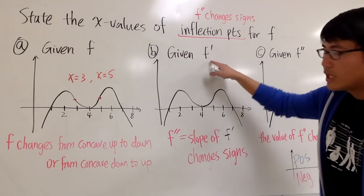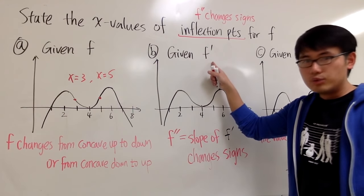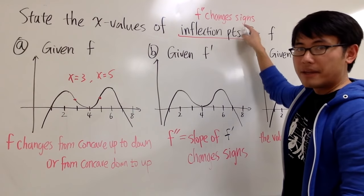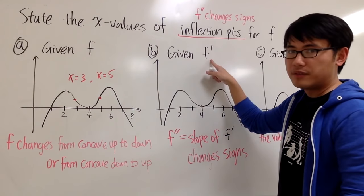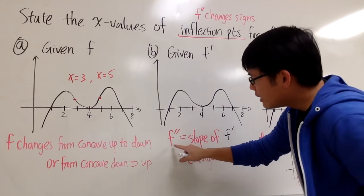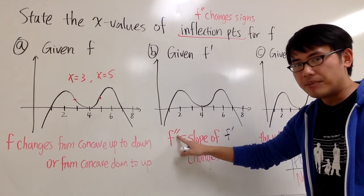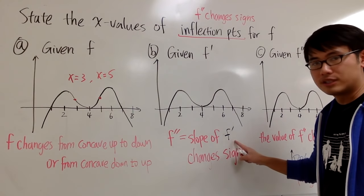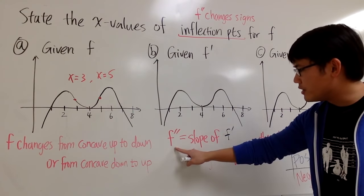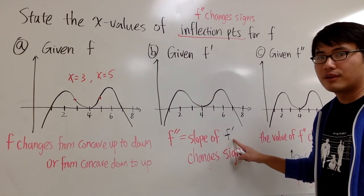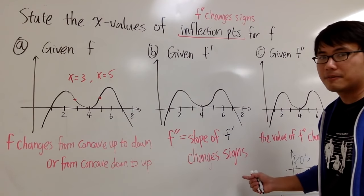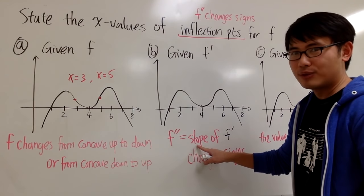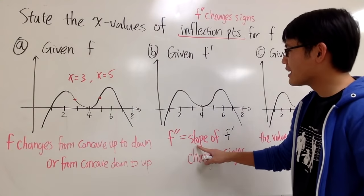The second situation: if you are given the first derivative. Remember, the inflection point is where the second derivative changes signs. But if you are given the first derivative only, remember that the second derivative can be interpreted as the slope of the first derivative. We still care about where the slope changes signs.